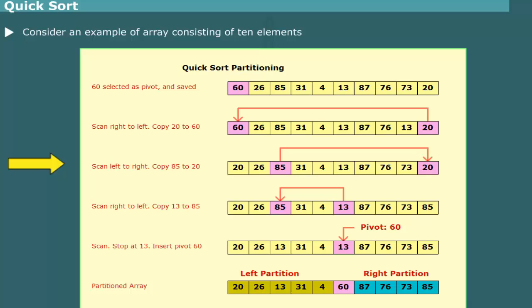Next, the array is scanned from left to right, beginning with element 26, skipping all elements that are smaller than the pivot 60. The element 85 being larger than 60, we stop at element 85. The element 85 is copied into the element pointed to by the right pointer, that is element 20.